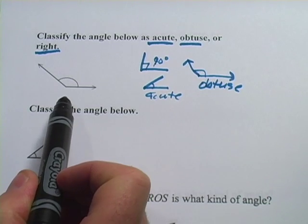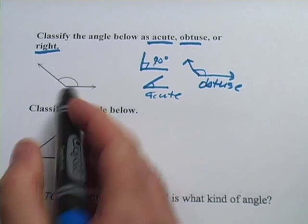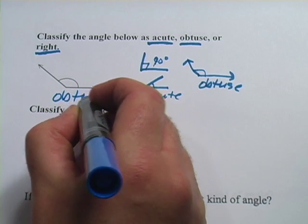So when we look at this one, I think you can tell just by looking at it that this is wider than a 90-degree angle, so that would be obtuse.